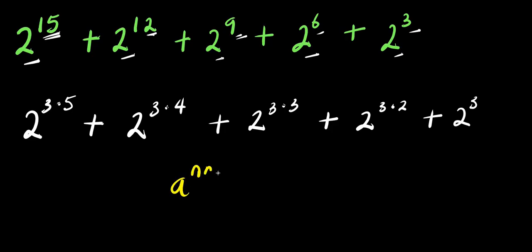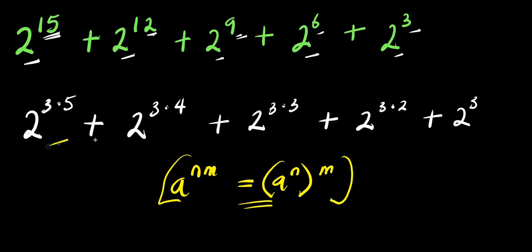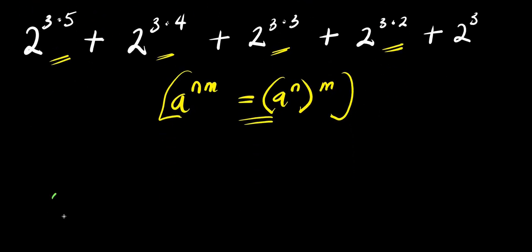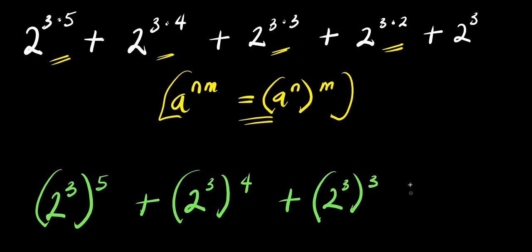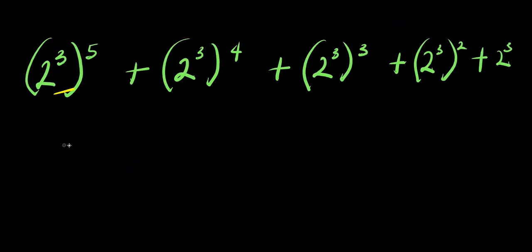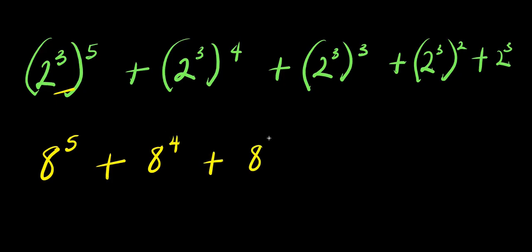Now, using the rule that a^(n×m) equals (a^n)^m, we apply this to each term. So we get (2^3)^5 plus (2^3)^4 plus (2^3)^3 plus (2^3)^2 plus (2^3)^1. Since 2^3 is 2 times 2 times 2, that is 8, we now have 8^5 plus 8^4 plus 8^3 plus 8^2 plus 8.